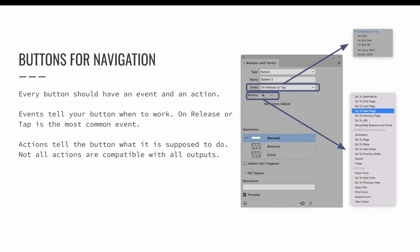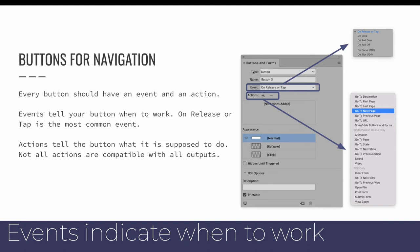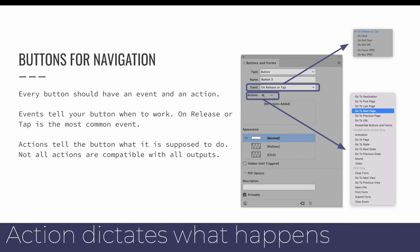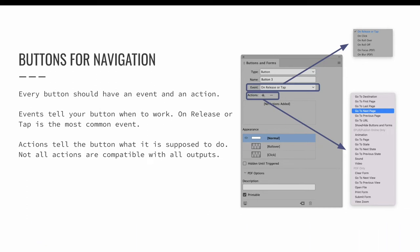Every button must have an event and an action. Events tell your button when to work — 'On Release or Tap' is the most common, meaning the button activates when the user clicks and releases. The action tells the button what to do. Click the plus button to add a new action; a flyout menu appears with choices divided into categories. InDesign indicates which actions work for different output types — for example, avoid the 'EPUB and Publish Online only' section if making an interactive PDF. For navigation, choose 'Go to Next Page.'